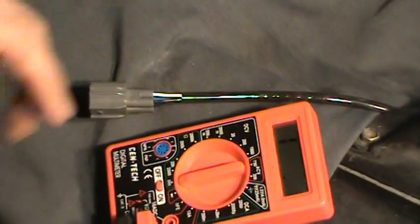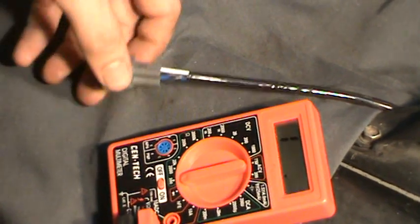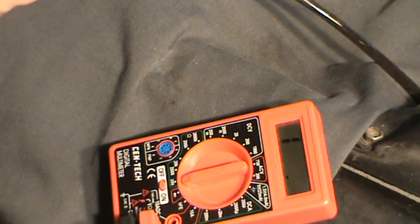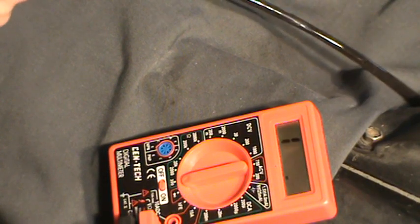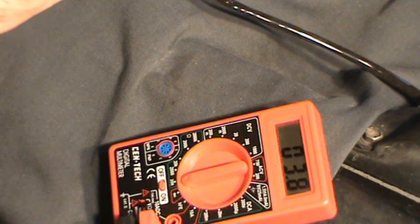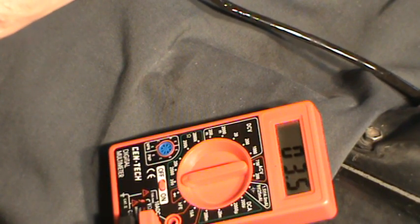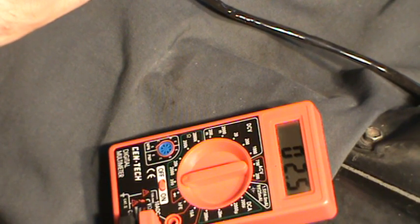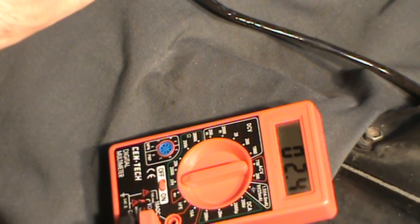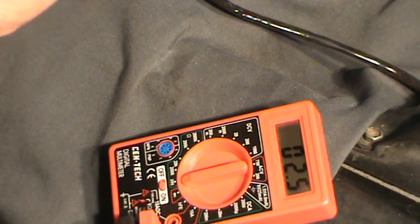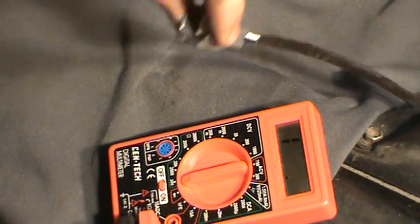I'll zoom you in so you can see what the results are. So I got 2.5, 2.4. That's the one using the correct sensor, the one that's in the vehicle.